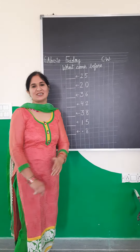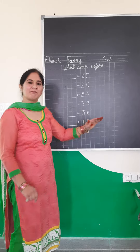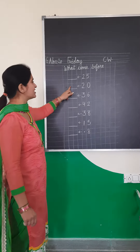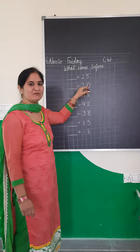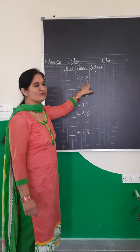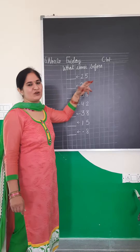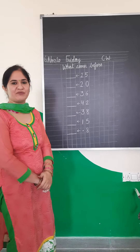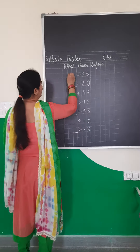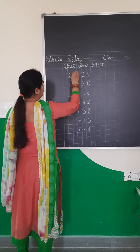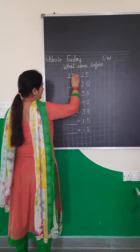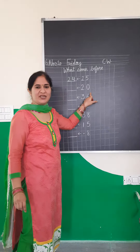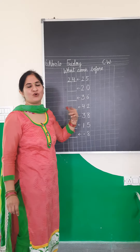What comes before — as in the number that comes just before a given number. For example: 25. What comes before 25? The answer is 24. What comes before 20?